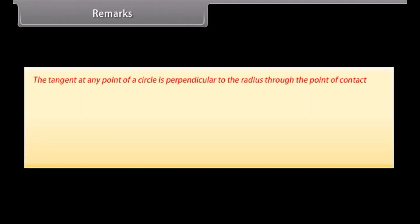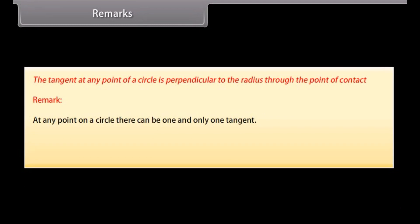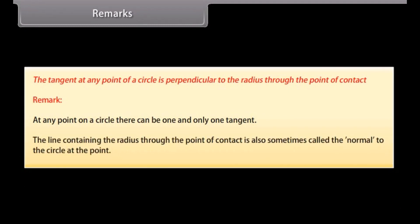Remarks. From this theorem, we can also conclude that at any point on a circle, there can be one and only one tangent. And the line containing the radius through the point of contact is also sometimes called the normal to the circle at the point.